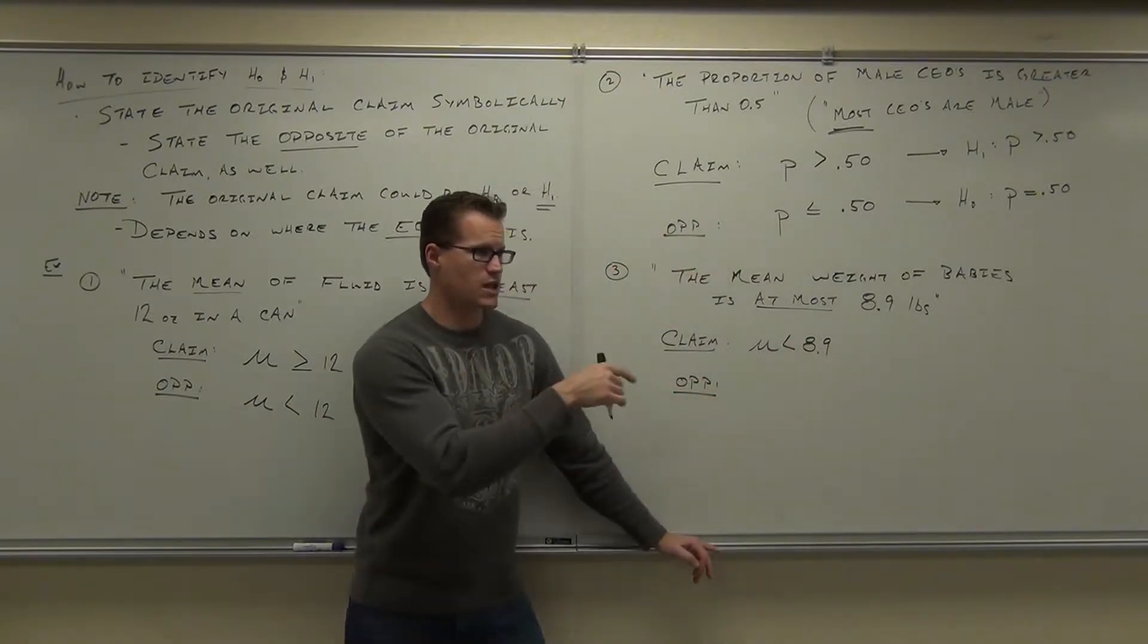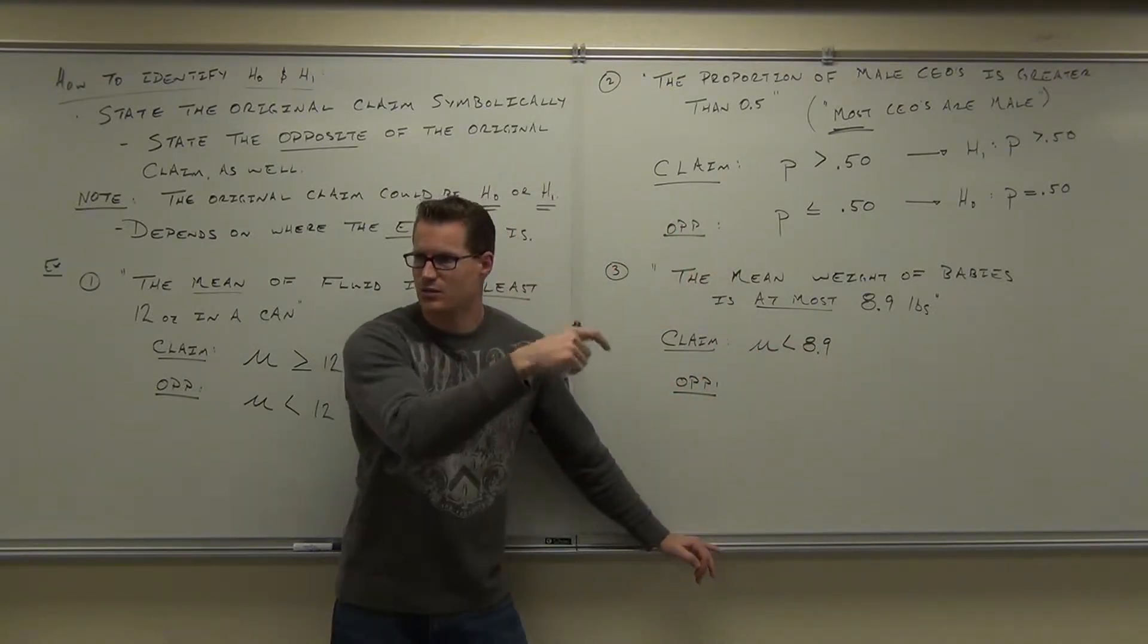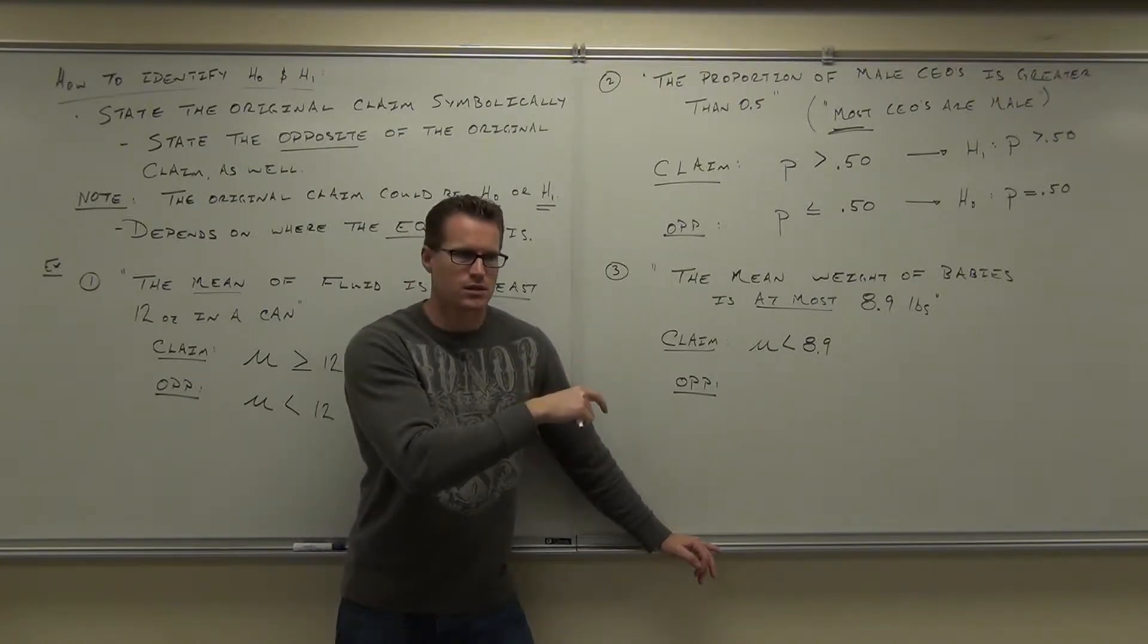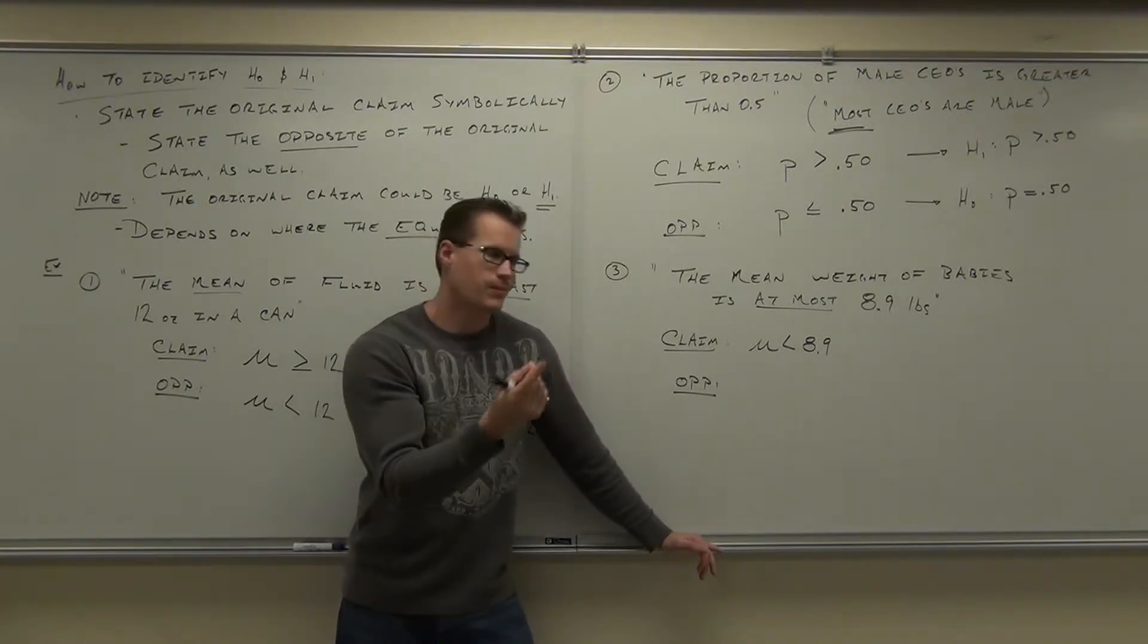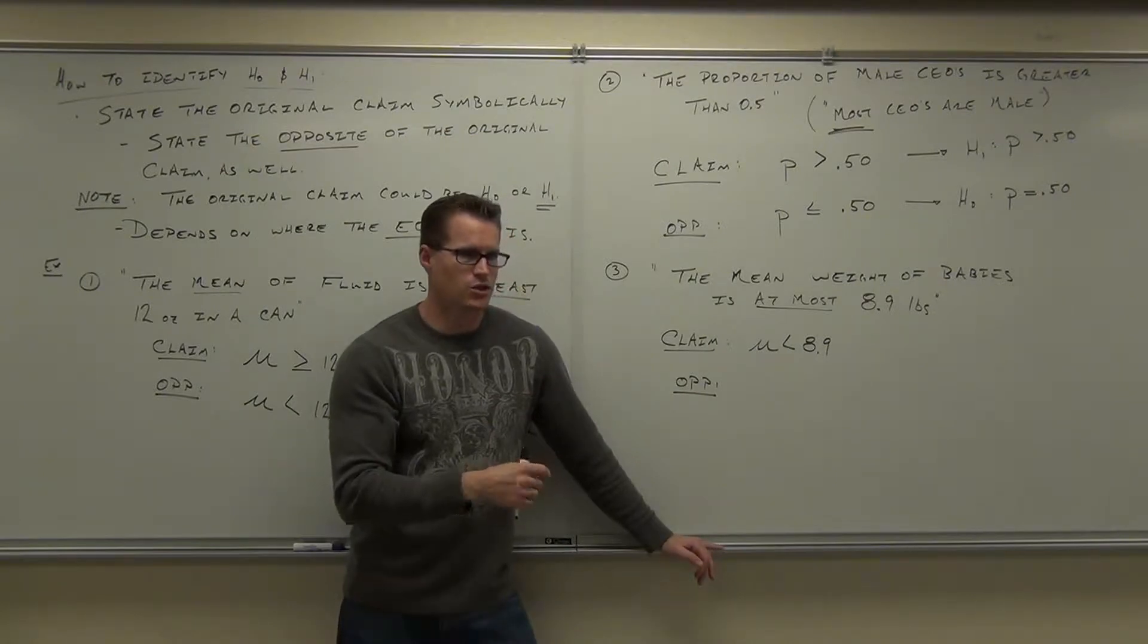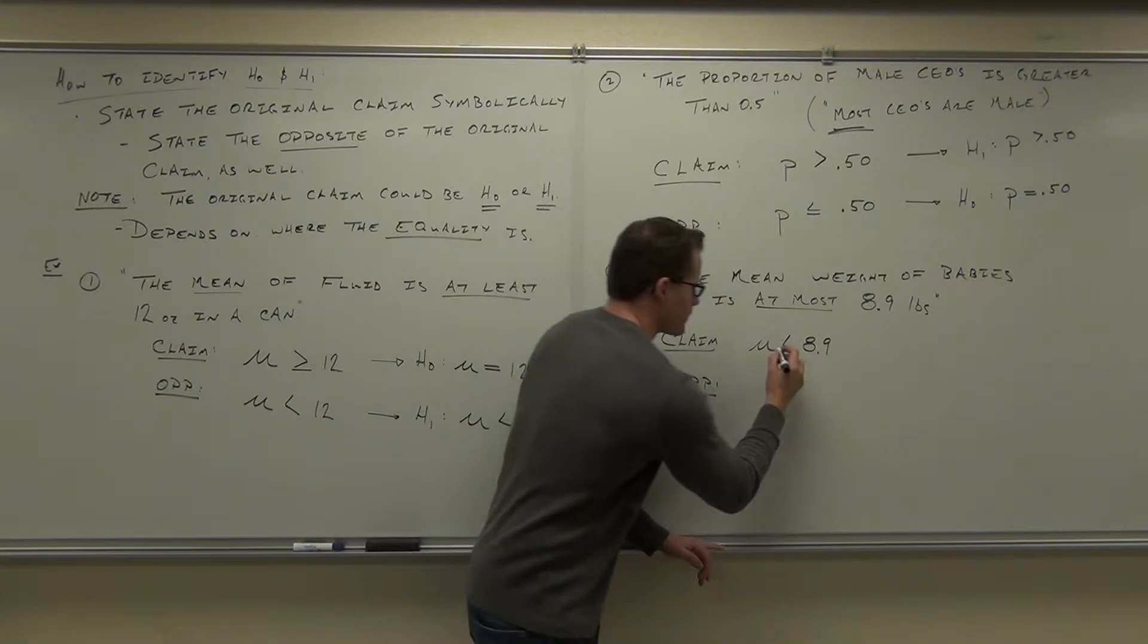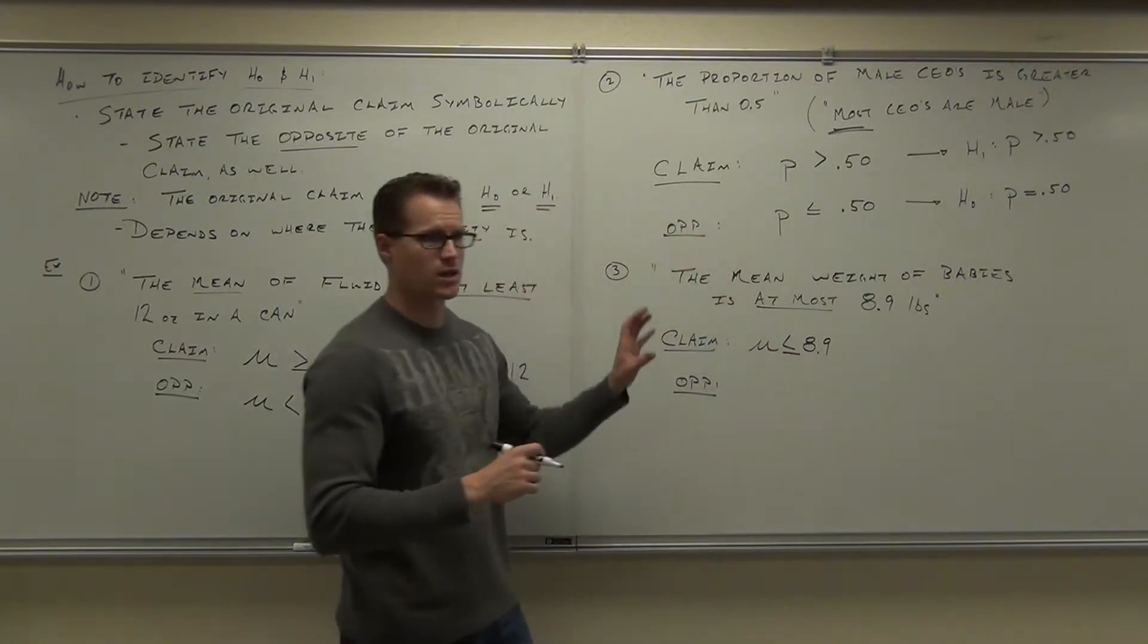We certainly understand that the mean has to be less than 8.9, right? Now, is there an equals or not? That's the key. Yeah. If you have at most $9, you could have $9 and be okay, right? If you have at most 8.9 pounds, it could be equal to. At most includes that equality.